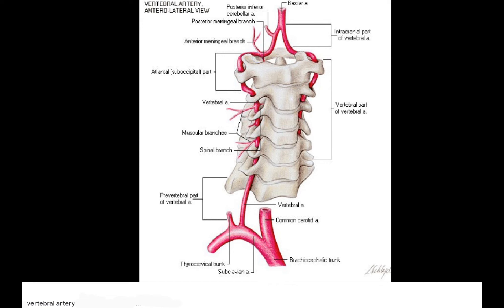Then we have the intracranial part, or fourth part. The intracranial part extends from the foramen magnum to the lower border of the pons.